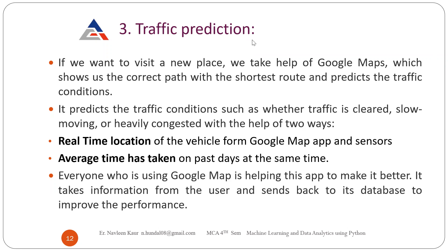The second process is the average time taken on past days at the same time. If you are at a certain place with a certain number of vehicles and certain traffic, it will give you an idea. Previously, vehicles at the same place with the same traffic took almost two hours to reach the destination, so for you it will be close to that. The prediction is not exactly accurate, but it is very close to accurate. Everyone using Google Maps is actually helping this app — you are unknowingly providing the data to them.